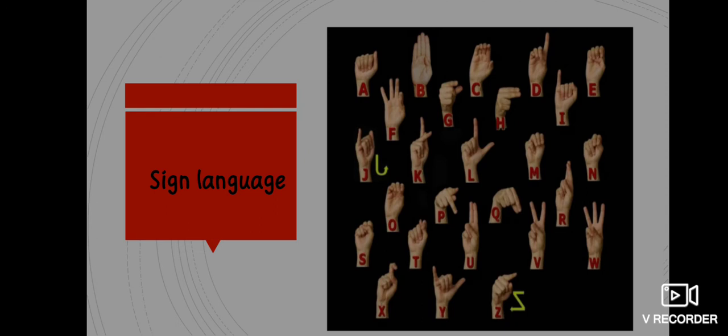Look at this picture — what is it? This is sign language. Deaf and dumb people use sign language to communicate. Deaf and dumb people na toh sun sakte hain aur na hi bol sakte hain, isliye woh sign language use karte hain doosron ko apni baat samjhane ke liye.